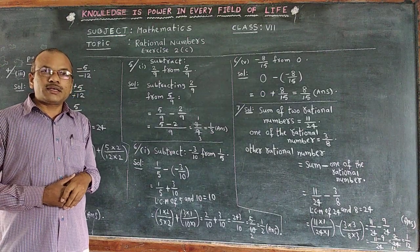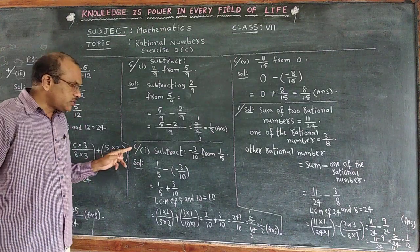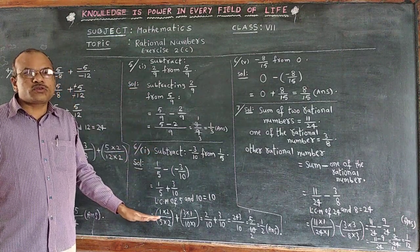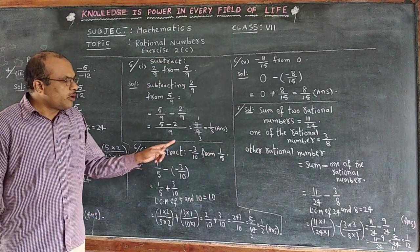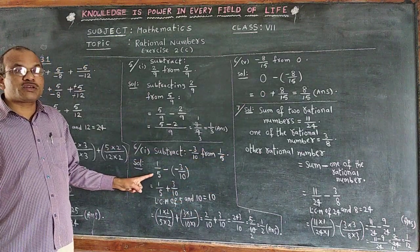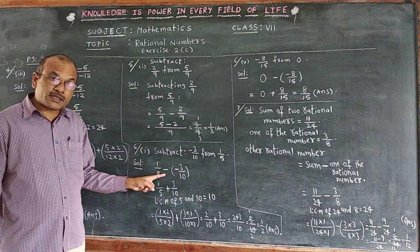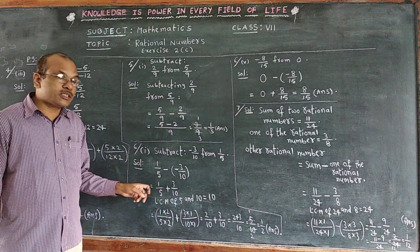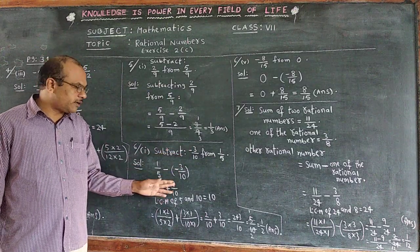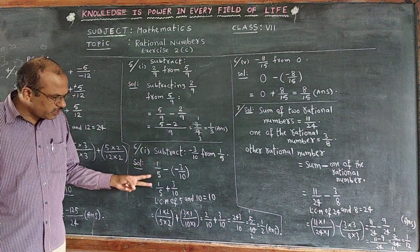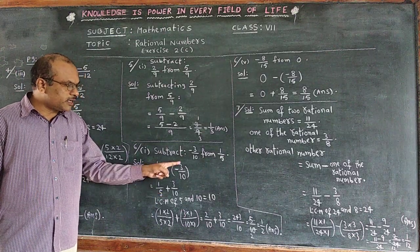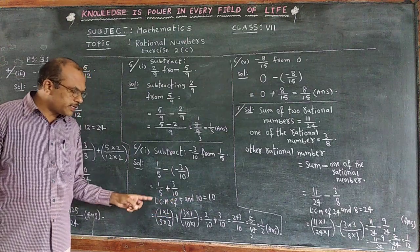Question 6, first bit: subtract minus 3 by 10 from 1 by 5. So we write 1 by 5 first, then minus, and the number being subtracted is minus 3 by 10. The very next step: 1 by 5 as it is, and minus into minus gives plus, so it becomes plus 3 by 10. Both denominators, 5 and 10, are different.